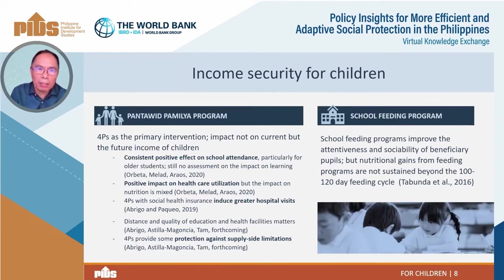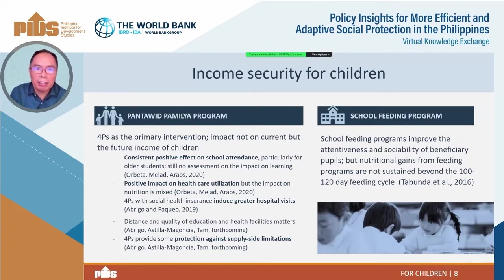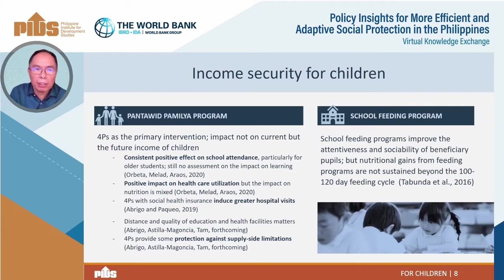On health, we found a positive impact on healthcare utilization, but the impact on nutrition is mixed. A relatively recent study by Dr. Abrego and colleagues shows empirical evidence that distance and quality of education and health facilities matter, and that 4Ps provides some protection against supply-side limitations. In the case of school feeding programs studied by Drs. Abunda and Albert and colleagues, they find that school feeding improves the attentiveness and sociability of beneficiary pupils. However, they also found that nutritional gains from feeding programs are not sustained beyond the 100 to 120 feeding cycle.